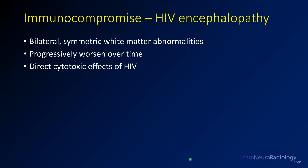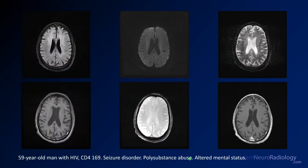HIV encephalopathy is a condition in which the HIV virus directly causes a leukencephalopathy. You get bilateral symmetric white matter abnormalities that tend to progressively worsen over time. Here you see a 59-year-old patient with a CD4 count of 169, a seizure disorder and substance abuse who is now altered. On FLAIR, there's subtle bilateral symmetric white matter abnormality — slightly too bright where you'd normally see white matter, but otherwise looks pretty normal.